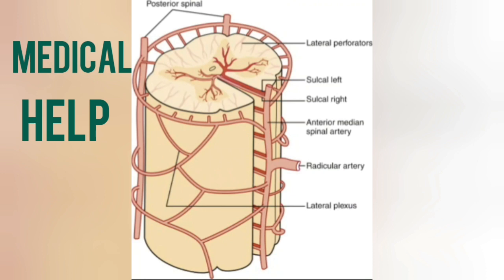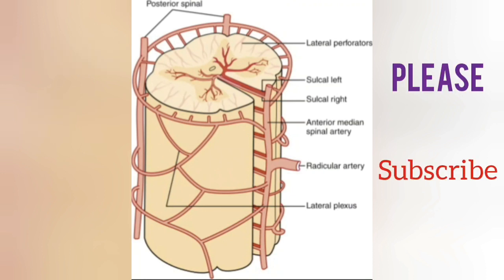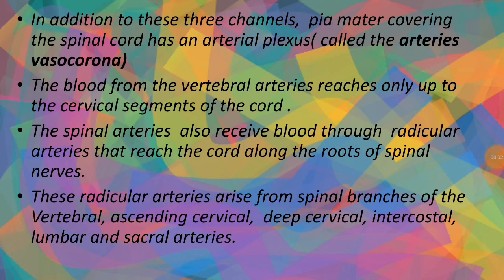On the posterior part of the spinal cord, there is the posterior lateral sulcus. In this diagram, this is the posterior lateral sulcus on one side, and on the other side there is also a posterior lateral sulcus. Along these sulci, the two posterior spinal arteries run. In addition to these three channels, the pia mater covering the spinal cord has an arterial plexus called the arteria vasocorona.